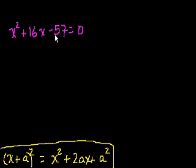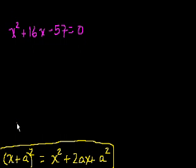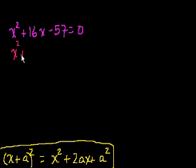First of all, let's check to make sure this isn't a perfect square. If this were, this coefficient would be equivalent to the 2a, so a would be 8, and then this would be 64. This is clearly not 64, so this right here is not a squared expression. So let me get rid of the 57 by adding 57 to both sides of this equation. So I get x squared plus 16x is equal to 57.